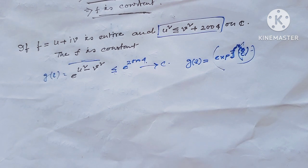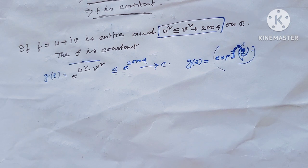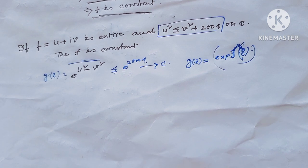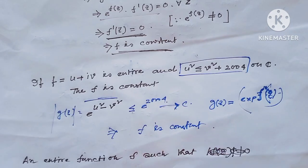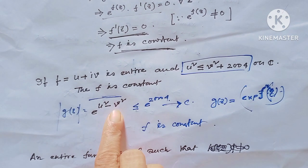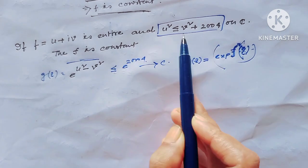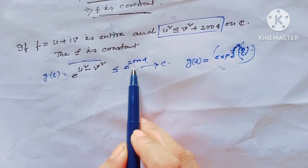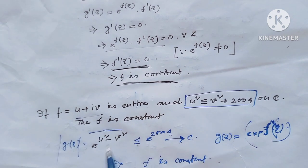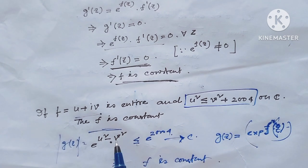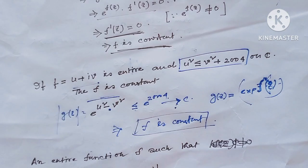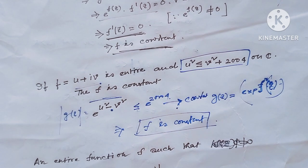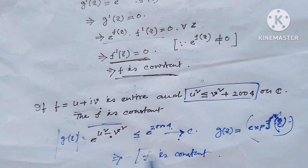Next: if F = U + iV is entire and U² ≤ V² + 2004 on the complex plane, then F is constant. Consider g(z) = e^{F²(z)}. Then |g(z)| = e^{U²−V²}, and since U² − V² ≤ 2004, we get |g(z)| ≤ e^{2004}, so g is bounded. Since F² is entire, e^{F²} is also entire. By Liouville's theorem, g is constant, and since g = e^{F²}, that implies F is also constant.